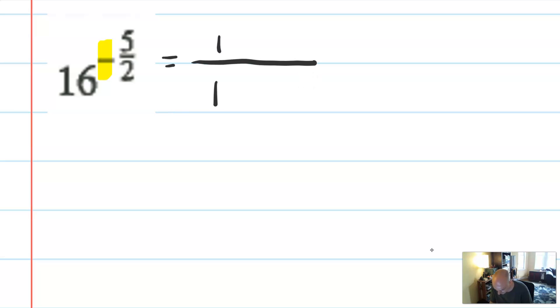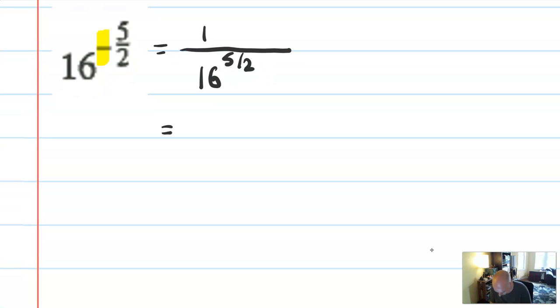So this is the same as 1 over 16 to the 5 halves. That's your first move. That's what happens with a negative. Then, we're going to think about this as 1 over the square root of 16 to the 5th. And half means square root, so technically there could be a little index of 2 there, but we don't write it because it's just a square root, and that's the standard.